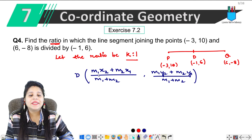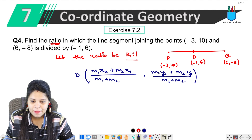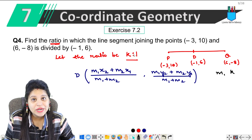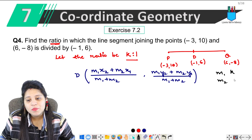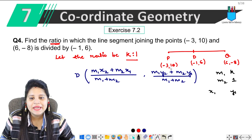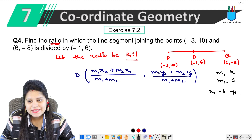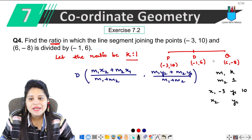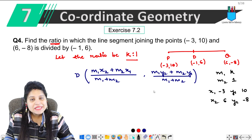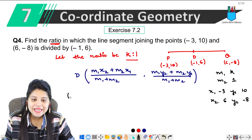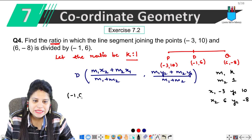Now we have the values. M1 is K, since our ratio is K:1, and M2 is 1. Now what are X1 and Y1? P coordinates are (-3, 10). And what are X2 and Y2? Q coordinates are (6, -8). Also, what do we have for D? D coordinates are (-1, 6).